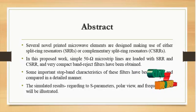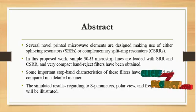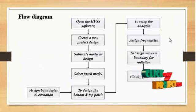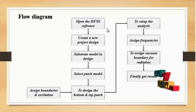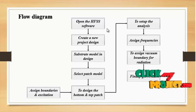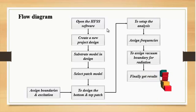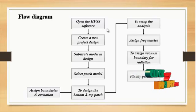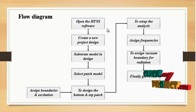This is one type of internal design — the split-ring resonator. Let us discuss the flow diagram of the process. First, open the HFSS software, which operates in 3D dimensions: X, Y, and Z axes. Then create a new project design. The split-ring resonator consists of two types of square ring resonators, and the substrate model is designed.